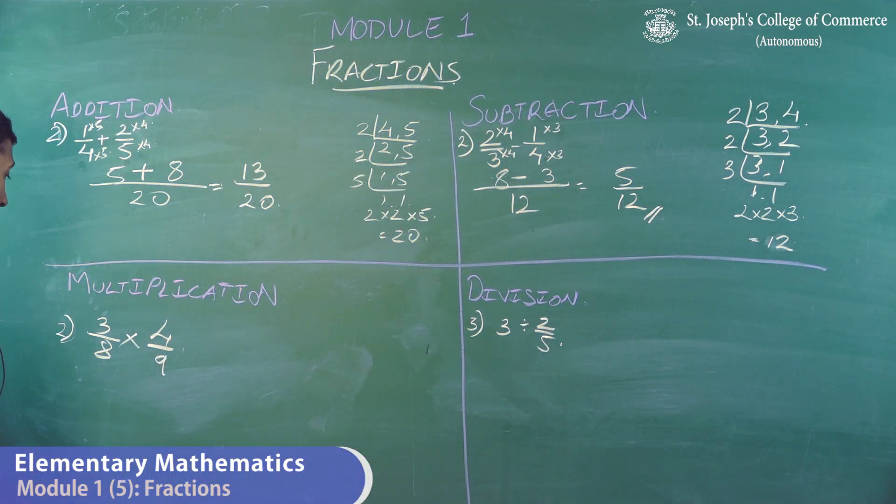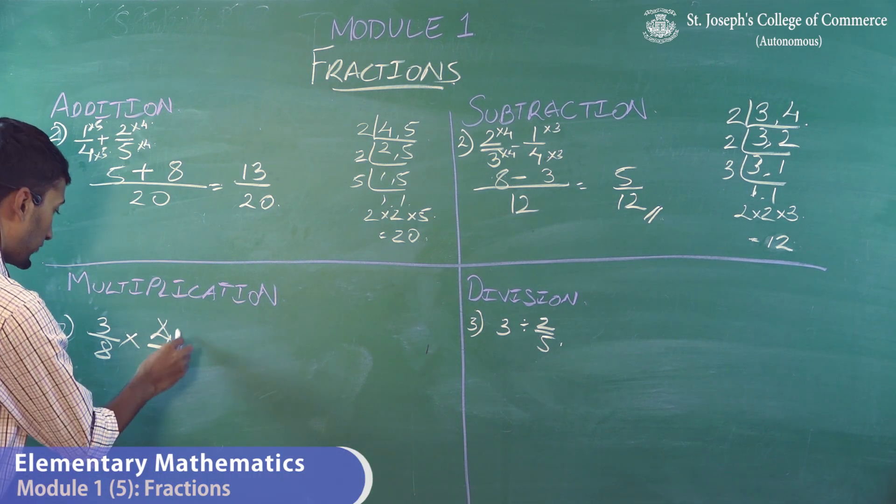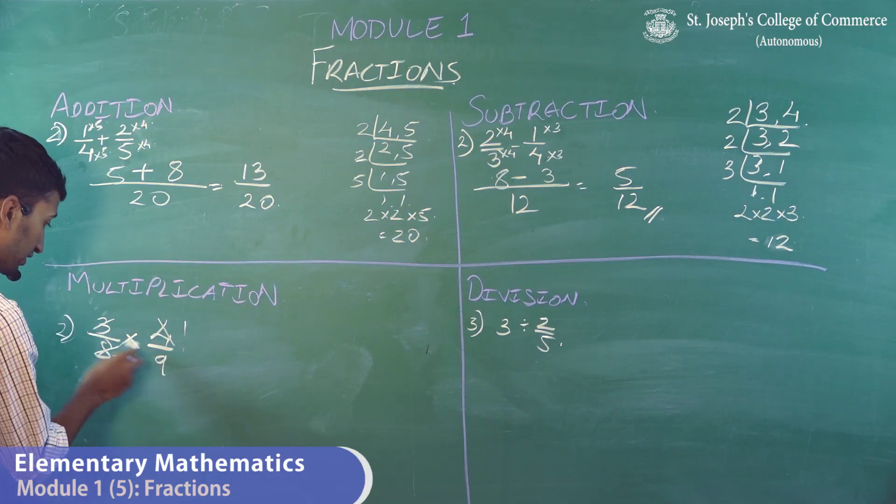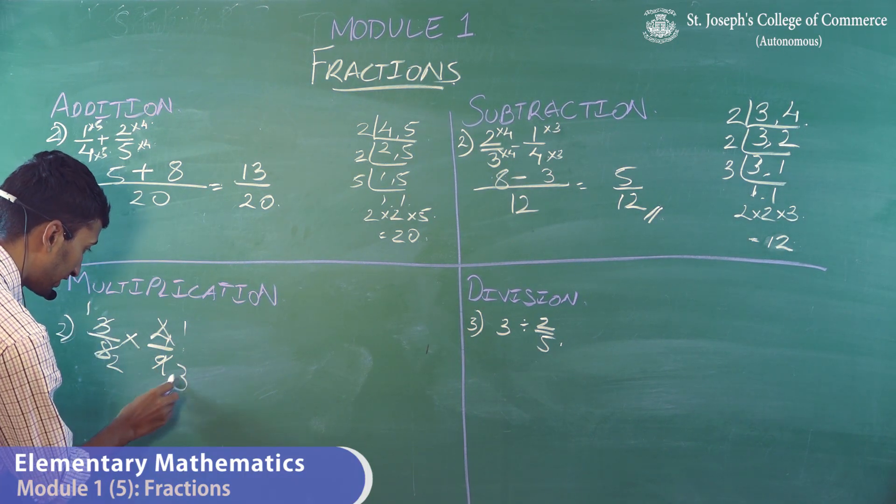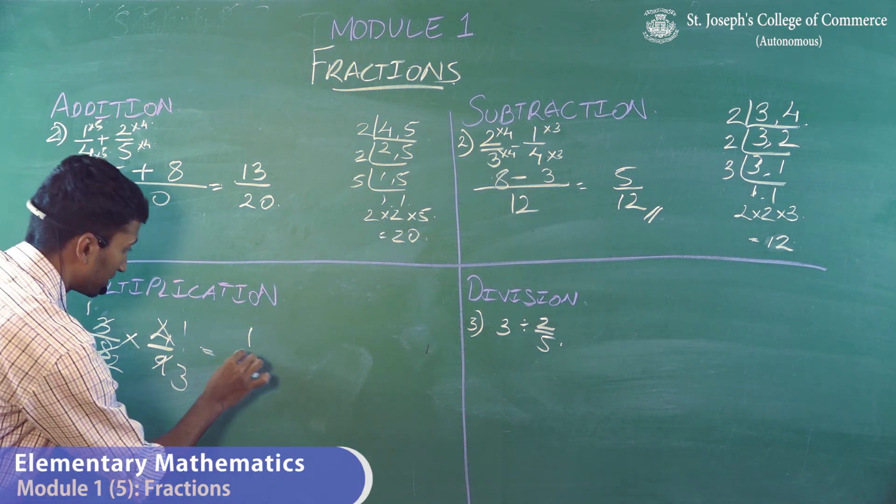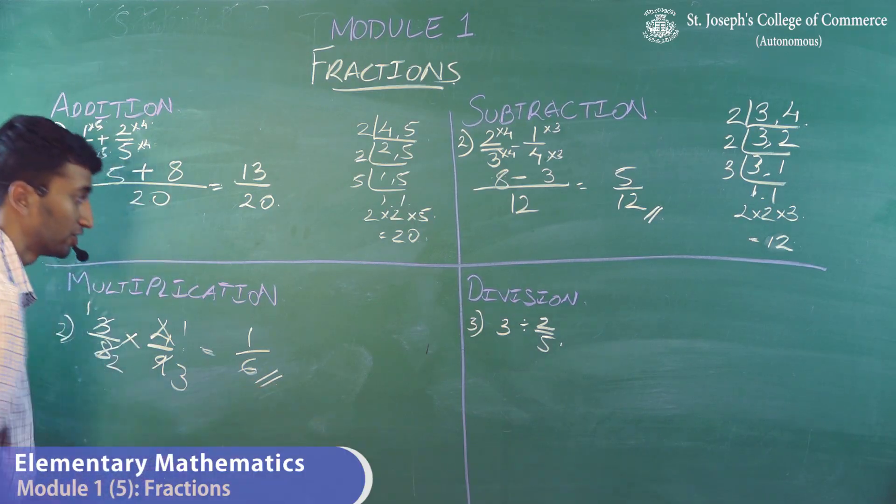We now move into multiplication, where since there's a multiplication sign, you can cancel out the common factors. 4 ones are, 4 twos are, 3 ones are, and 3 threes are 9. So 1 into 1 will give you 1, 2 into 3 will give you 6. So 1 by 6 is your answer.